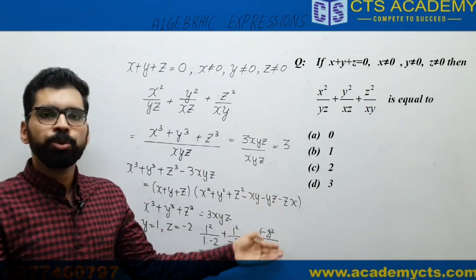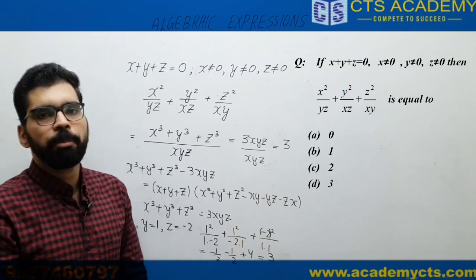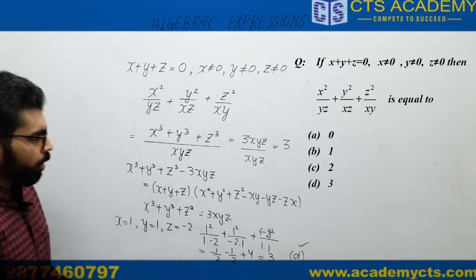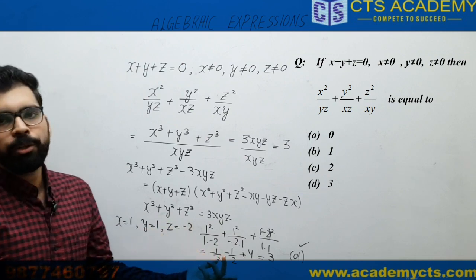You are given in the options: 0, 1, 2, 3. The answer is not 0, not 1, not 2. The answer will be option D: 3. If you forget the identity, you can do it in a very quick manner by taking some values. Nothing else.